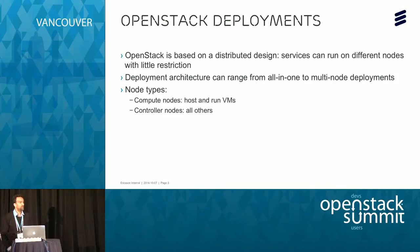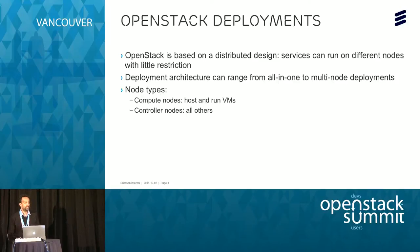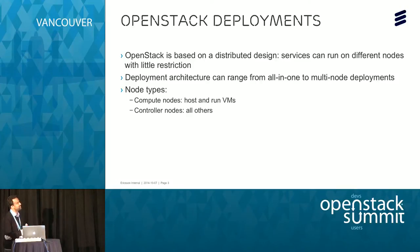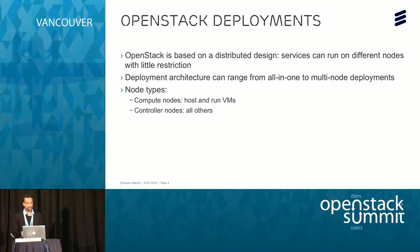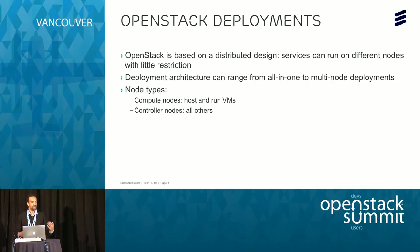As you most probably know, OpenStack is based on a distributed design. This means you can run the different OpenStack services in a highly distributed setting. Because of this, your deployment can range from an all-in-one deployment to a multi-node deployment. When you talk about an OpenStack deployment, you generally talk about two kinds of nodes: compute nodes, which host and run the VMs, and controller nodes that don't run VMs but run all other services required to support your OpenStack cloud.